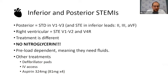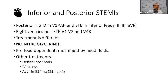Right ventricular involvement shows ST elevations isolated to V1 and V2. This is where you can use a right-sided V4 lead — basically taking the V4 lead from the left side and placing it on the right side in the same location. You don't always have to do this, but it can help. Normally in right ventricular infarction, V4 won't have ST elevations on the standard left-sided placement, but if you move that lead to the right side, you will see ST elevations.